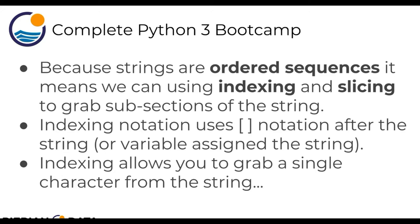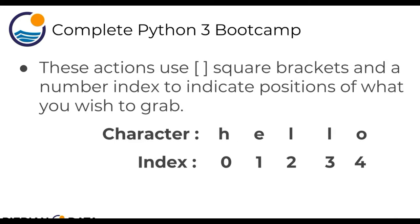Indexing is the term used when you want to grab a single character from the string. Every single character has an index position assigned to it, and you start at zero. That's an important note in Python — indexing starts at zero. So H has a corresponding number of zero, E is one, L is two, L is three, O is four. So if I wanted to grab the E, I would use a one inside the square brackets, and it would return back E.